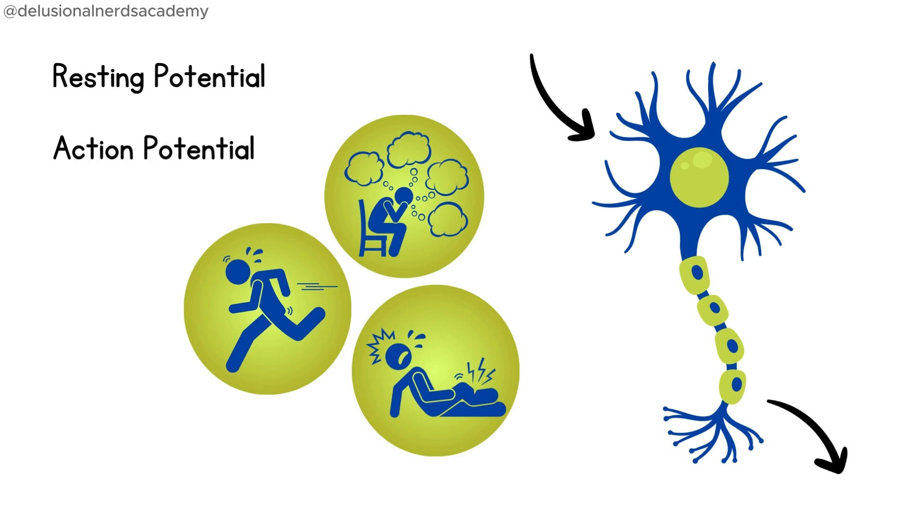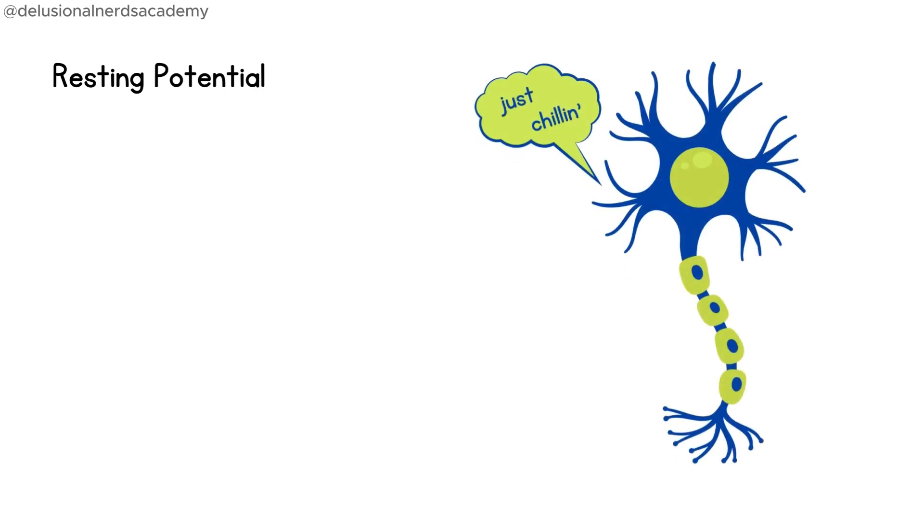When a neuron is not sending a signal, it is in a state called a resting potential. It is characterized by a stable negative charge inside the neuron compared to the outside.